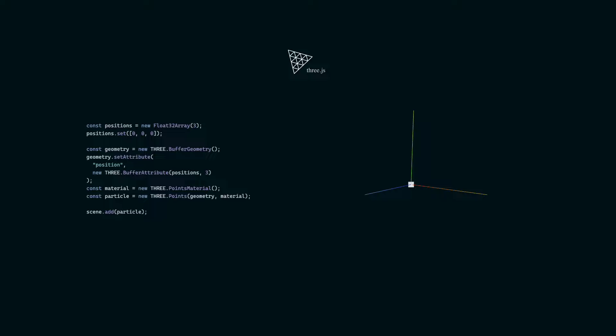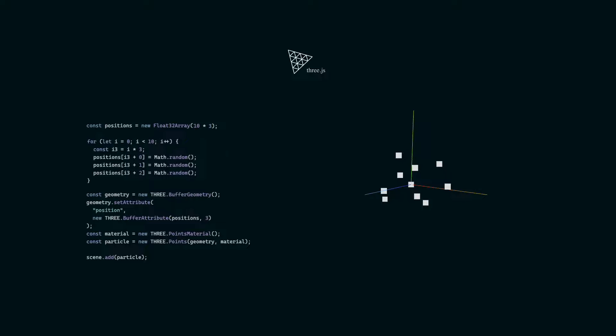But I don't speak directly to the GPU, because I'm shy — and also it's hard. So I use a library called Three.js to make things easy for me. I define a location in my world, describe an appearance, and make a point. To have 10 of them, I simply define 10 random locations instead of 1.